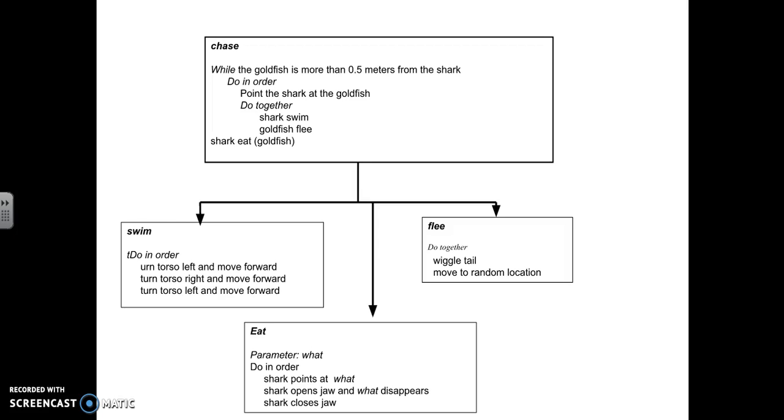Then once those conditions are proven to be false, we want to have the shark eat the goldfish, in which case we'll need a parameter, which would be the other object in the world, in this case the goldfish. Do in order: shark points at the object, shark opens jaw, the object disappears, shark closes jaw. You can kind of see how this is going to play out, but now the question is how do we actually write the code and test it and debug the code so that it works properly?